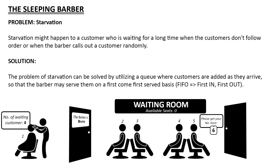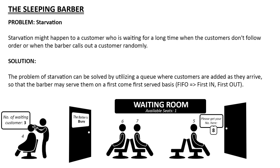The solution for this is by utilizing a queue where customers are added as they arrive, so that the barber may serve them on a first-come, first-served basis, also known as FIFO — first-in, first-out. As can be seen on the illustration, the order in which the customers are now being served is in numerical order. By doing this, the problem of starvation can now be avoided.